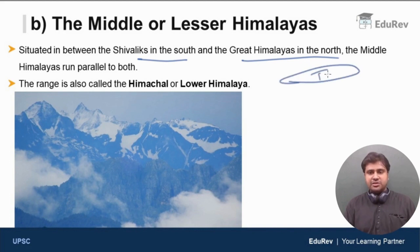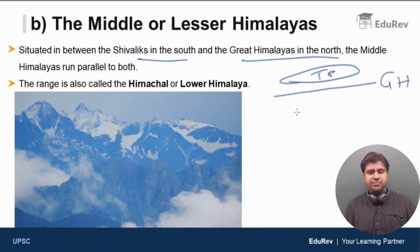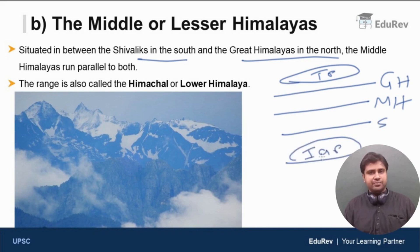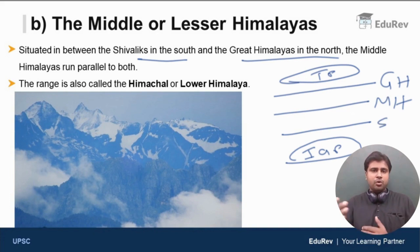Just imagine that this is the Tibetan Plateau. To the south of Tibetan Plateau, you have the great Himalayas or the Himadri. In the middle, you have the middle Himalayas. And to the south, you have Shivaliks or the outer Himalayas. And to the south of Shivaliks, you have the Indo-Gangetic plain. So, middle Himalayas are situated in between Shivaliks to the south and great Himalayas to the north, and run more or less parallel to both the ranges.